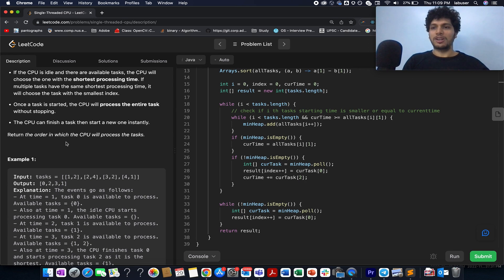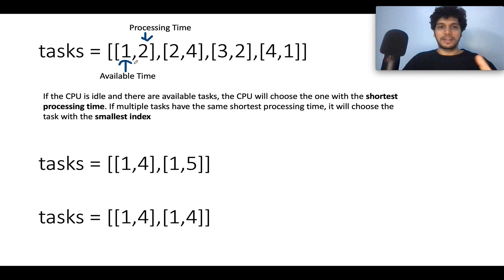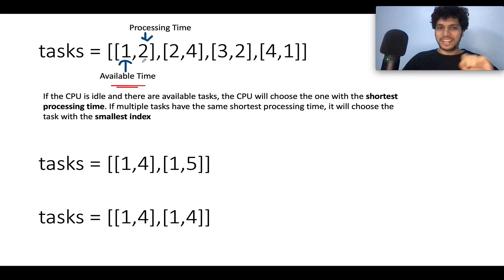Once you go through the solution you'll feel this question is not as hard as it looks. Let's hop on to the presentation. Each task has two attributes: the first is the time when the task is available to be consumed — we call it enqueue time or available time. The other attribute is processing time — how much time the task takes to execute.